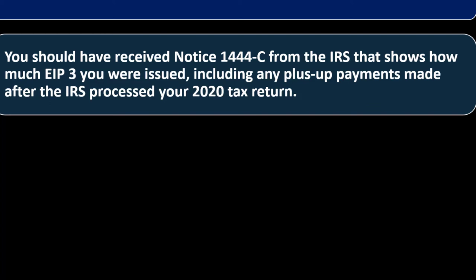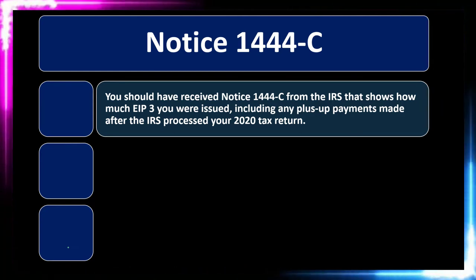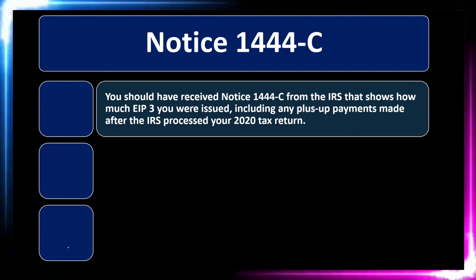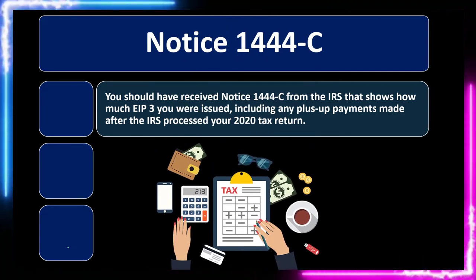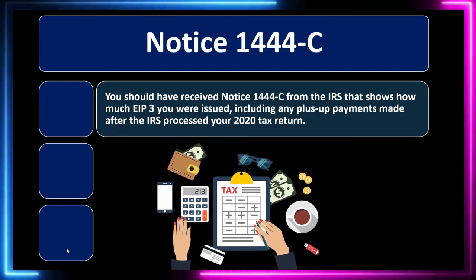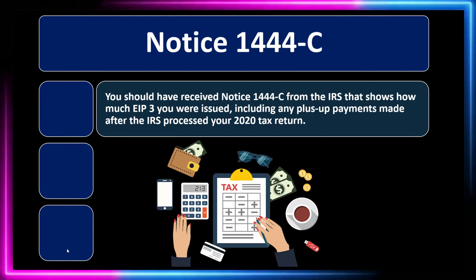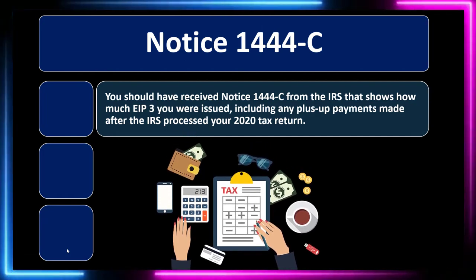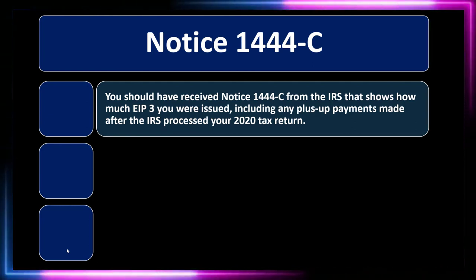A plus-up payment occurs when they got the payment wrong for some reason and tried to correct it. For example, if they had your 2019 tax return but not your 2020 return, and your 2020 return would have produced a higher estimate, once you filed your 2020 return they gave you a plus-up payment — even though the payment is ultimately based on 2021 taxes. You could receive multiple payments as a result. If you don't have the notice, you can log into your account on the IRS website to find the payment information, as the IRS is doing more and more online.